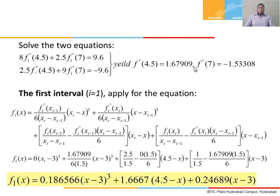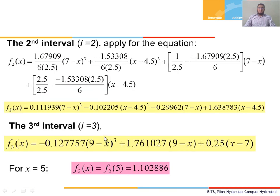As already noted, in spline interpolation each interval gives a different function. So basically what we are doing is finding a different function for each interval. For i = 1, the first interval, we find f_1(x). We have already found all the unknowns — namely f''(x_i) and f''(x_{i-1}) — for each interval. Applying them to interval 1, we get f_1(x); to interval 2, we get f_2(x); and to interval 3, we get f_3(x). Since x = 5 lies in the second interval, solving gives f_2(x) = 1.102886.